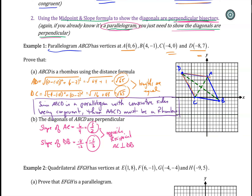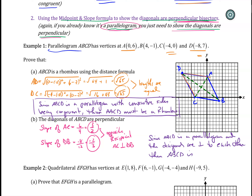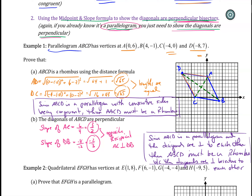Tying this all together with a sentence: since ABCD is a parallelogram and the diagonals are perpendicular to each other, then ABCD must be a rhombus, because the diagonals are perpendicular bisectors of each other. That's just another variation of how I can word that in an alternative method.